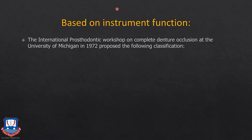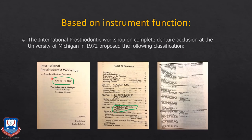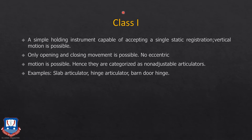Next, classification based on the function of the articulator: the International Prosthodontic Workshop at the University of Michigan in 1972 proposed a comprehensive and elaborate classification for articulators, which is universally accepted and followed throughout the world. Basically, there are four classifications — class one to class four.